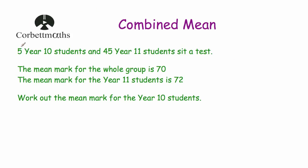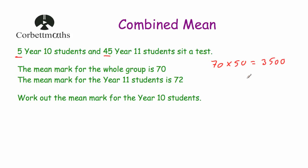This time we've been given that there are 5 Year 10 students and 45 Year 11 students and they sat a test. The mean mark for the whole group — all 50 students — is 70, and the mean mark for the 45 Year 11 students is 72. The question says: work out the mean mark for the Year 10 students. So we've been given the mean for the whole group. If we multiply the mean, 70, by 50, we'll find the total mark for all the students. So 70 multiplied by 50 is equal to 3,500 — there are 3,500 marks altogether.